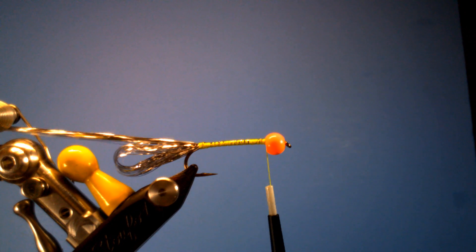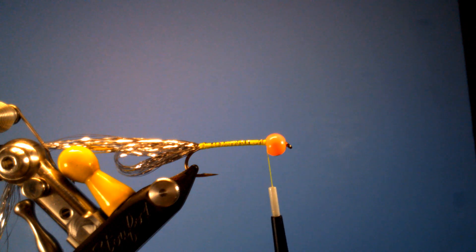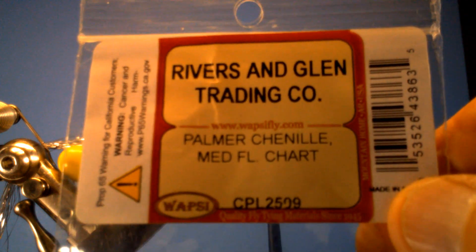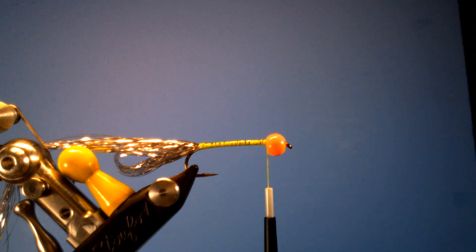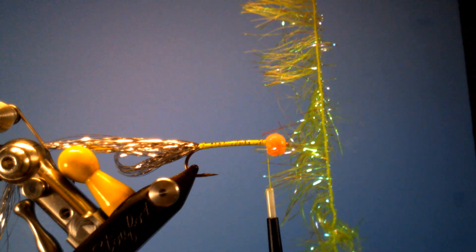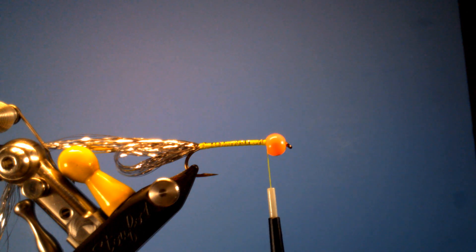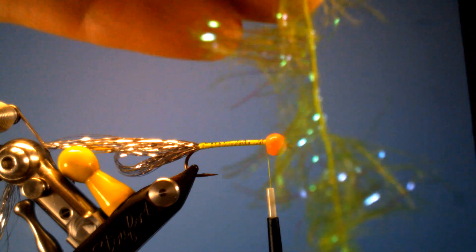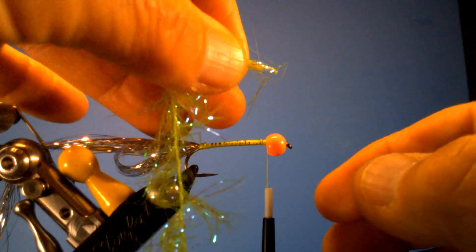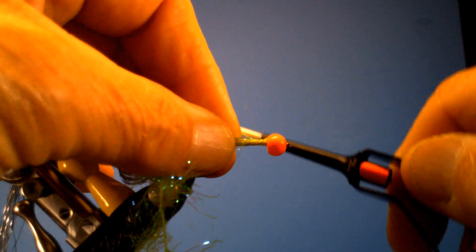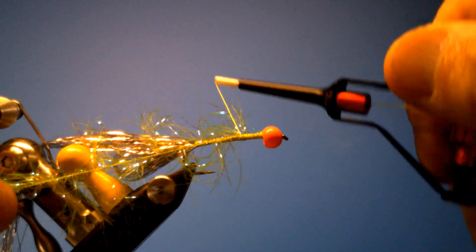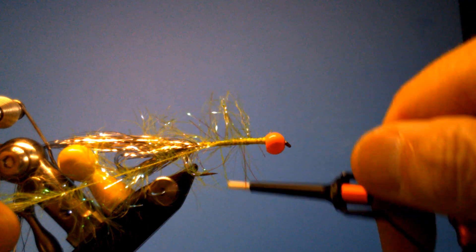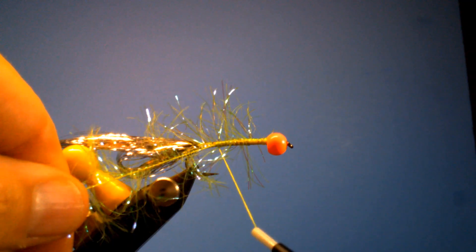This is what I'm going to use to wrap my body. I'm going to first put on some palmer chenille medium size, using chartreuse. Sometimes when you look at this, it looks like it's got some kind of grain that almost looks like it's flowing downward. I'm just going to tie this in.